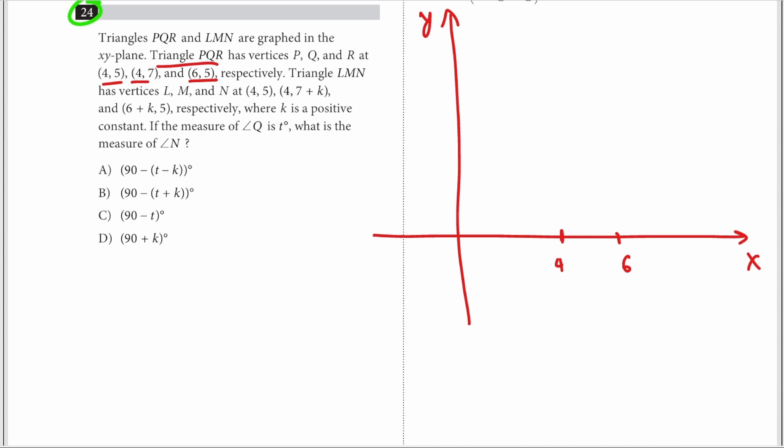...this is 6, this is 5, and this is 7. So we'll have the coordinate P right there - 4,5. Then we'll have 4,7, so that's P - 4,7 - that's going to be Q. And then that's P, and then 6,5 right there, so that is R.